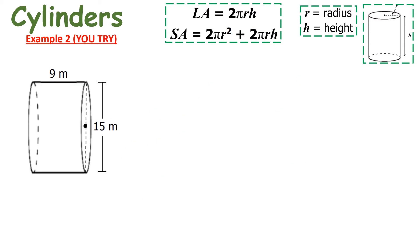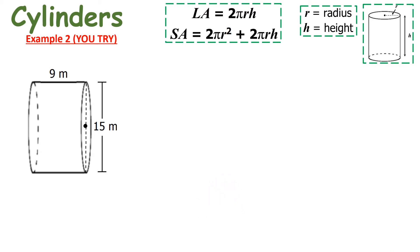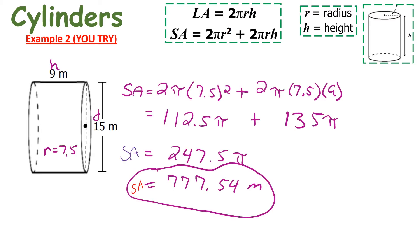For problem number two, find the surface area — which includes finding the lateral area. Go ahead and pause the video and try this on your own. The surface area is 777.54 meters squared, and the lateral area is 135π. Pause the video and analyze the work if you didn't get it correct.